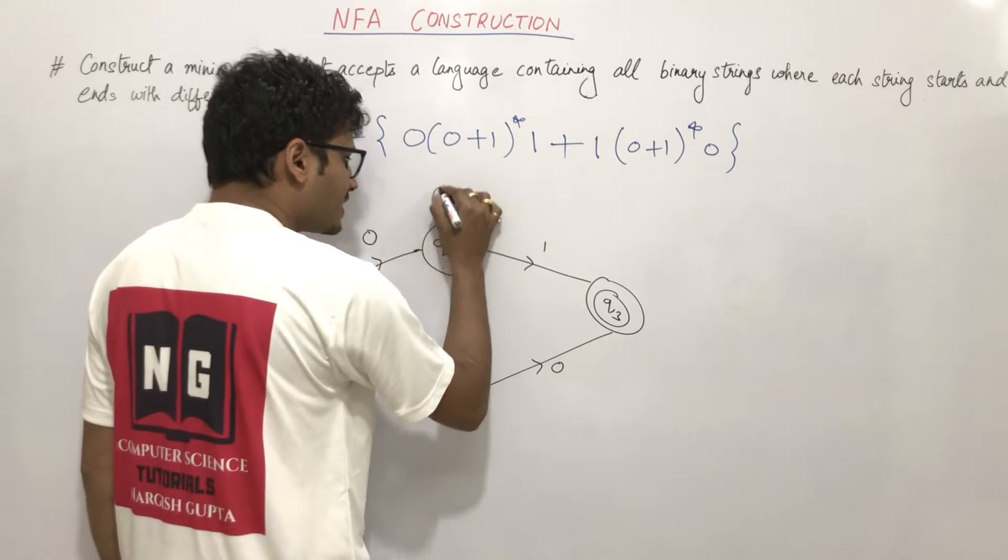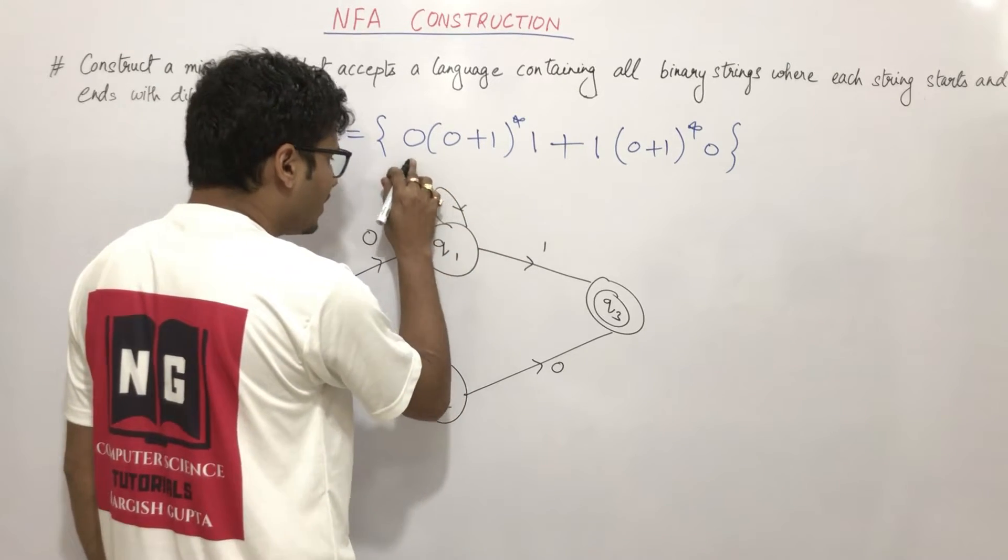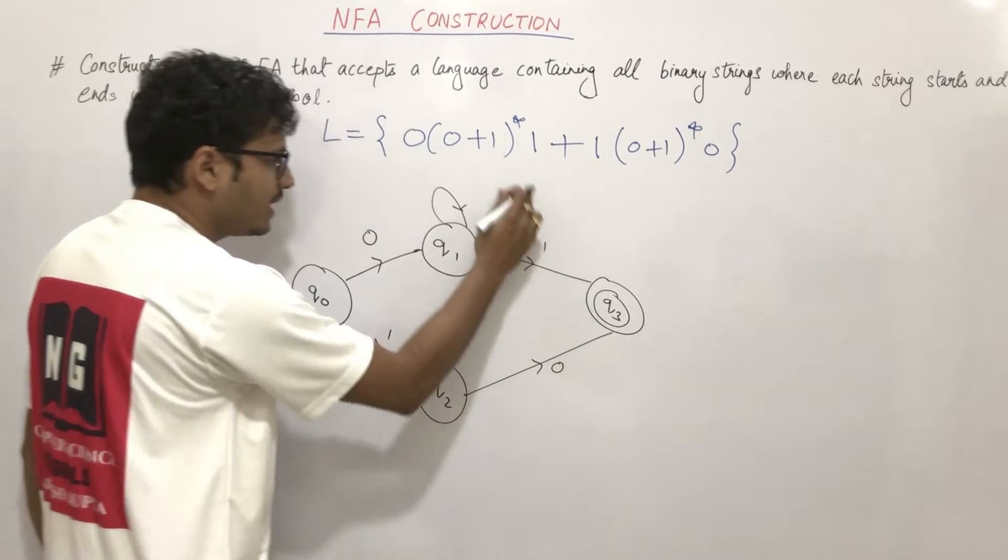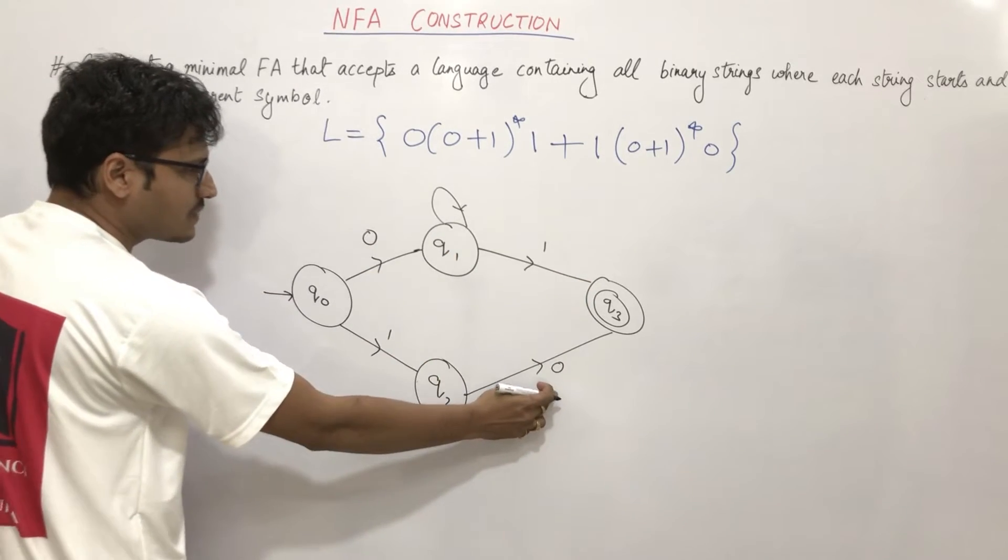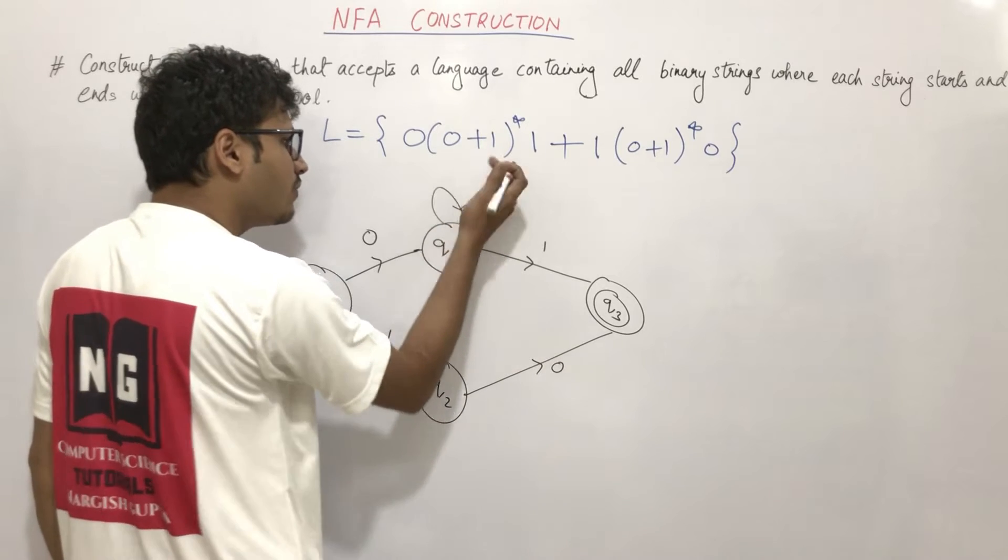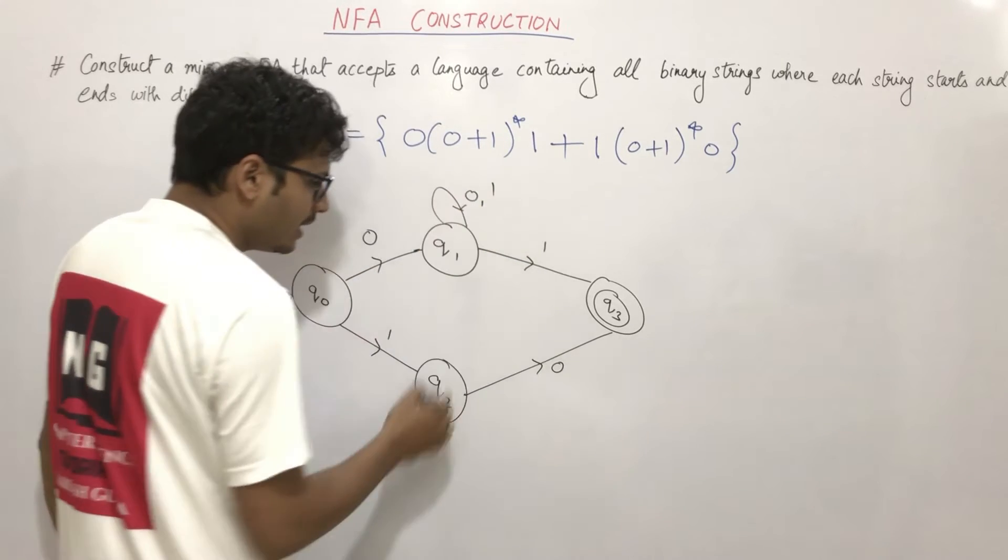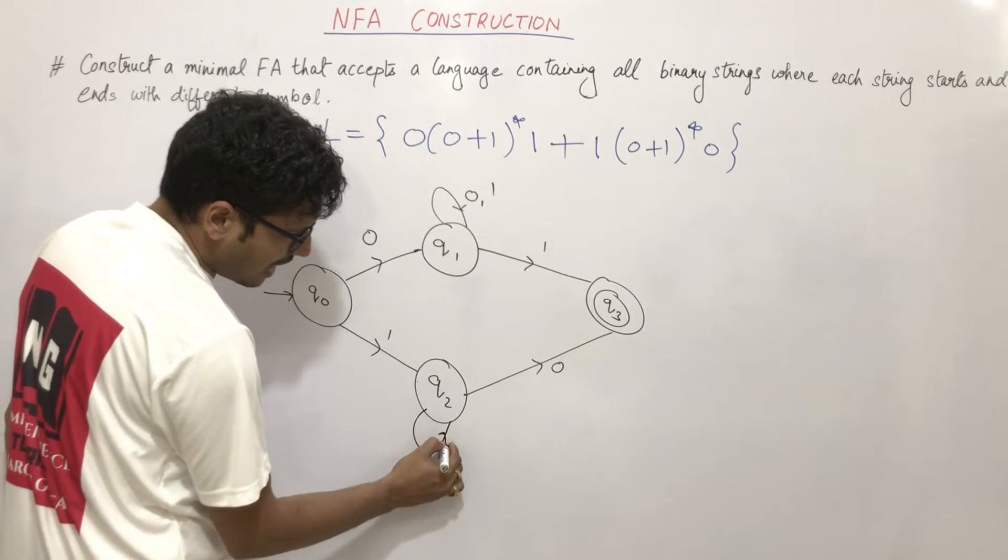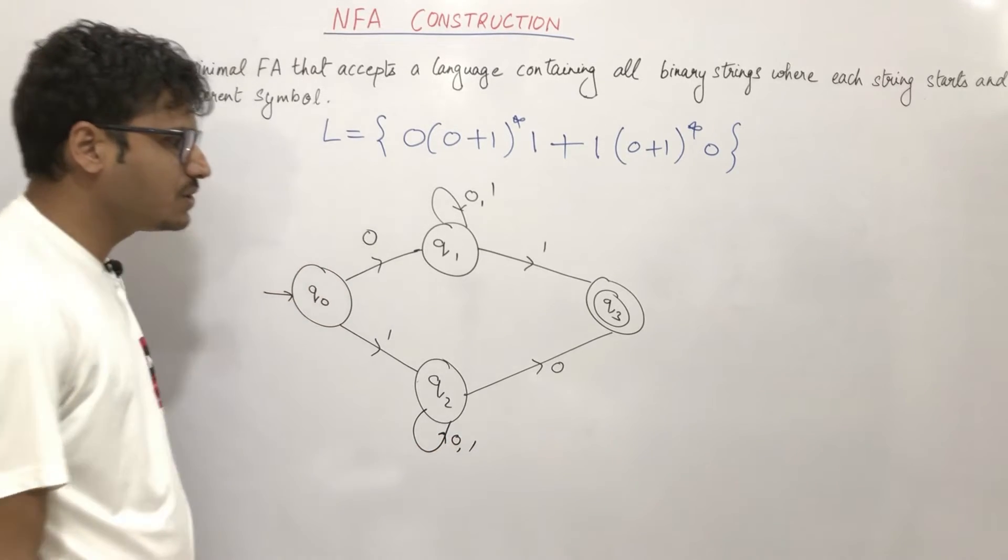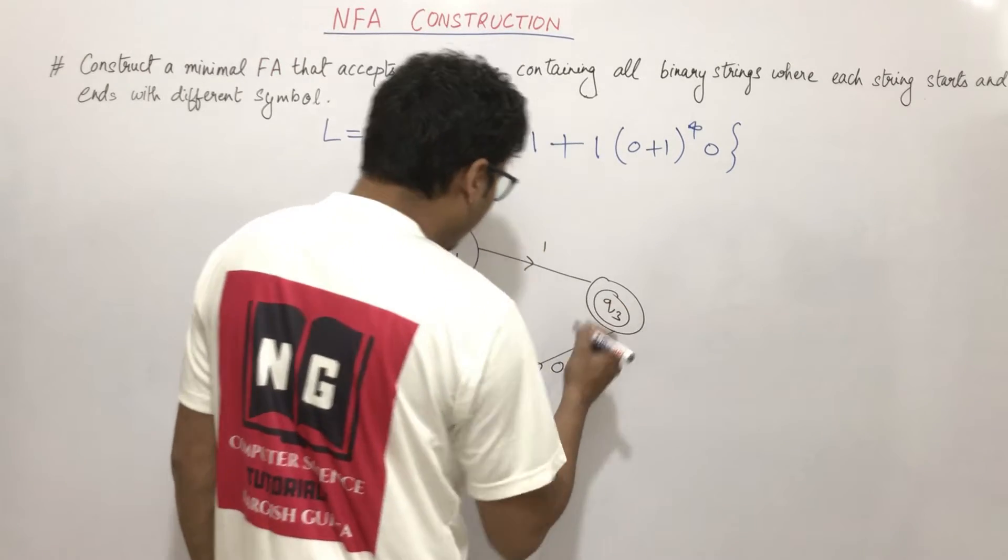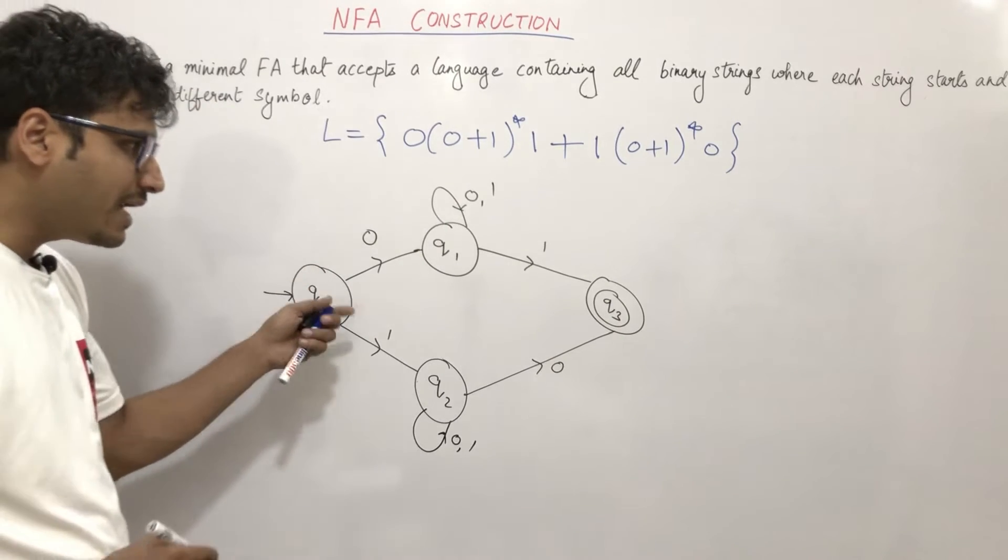In this case, we can do this: we said start with 0 and end with 1, or start with 1 and end with 0. Any combination of 0 and 1 can occur in between, so here also any combination of 0 and 1 can occur. So if we look at this machine, this is NFA not DFA.